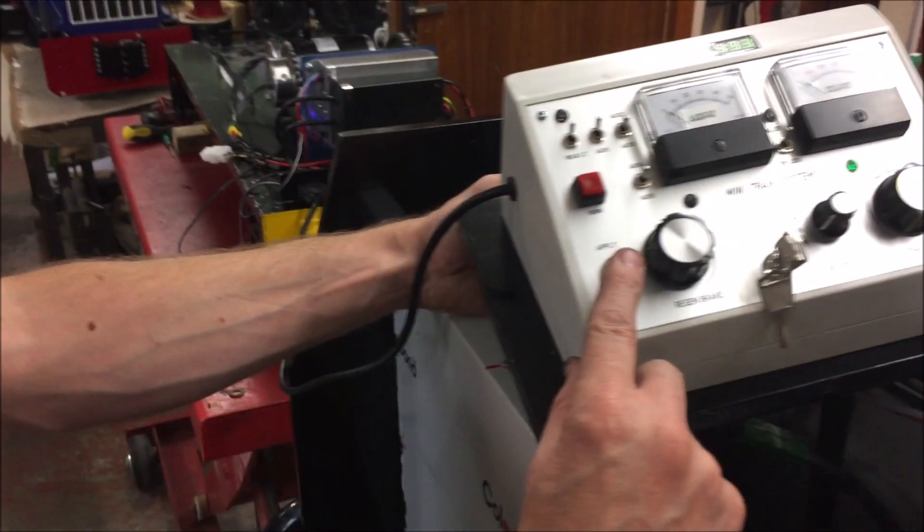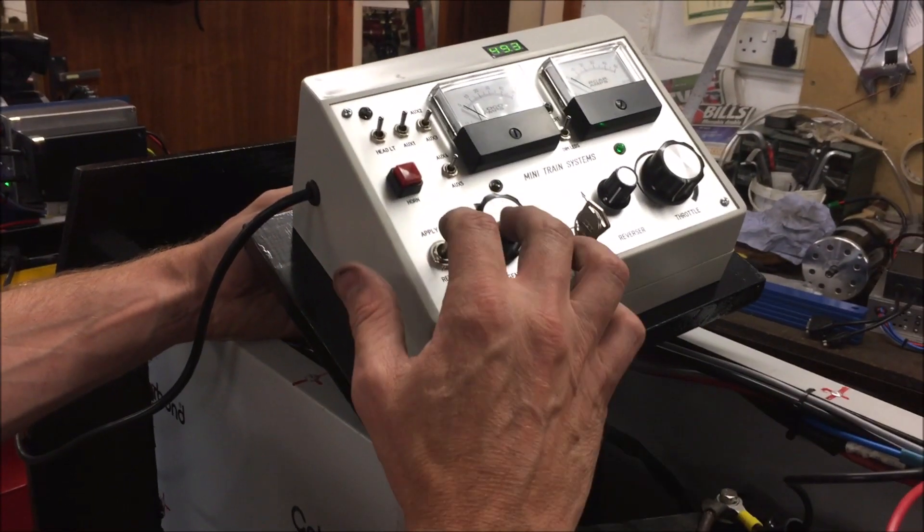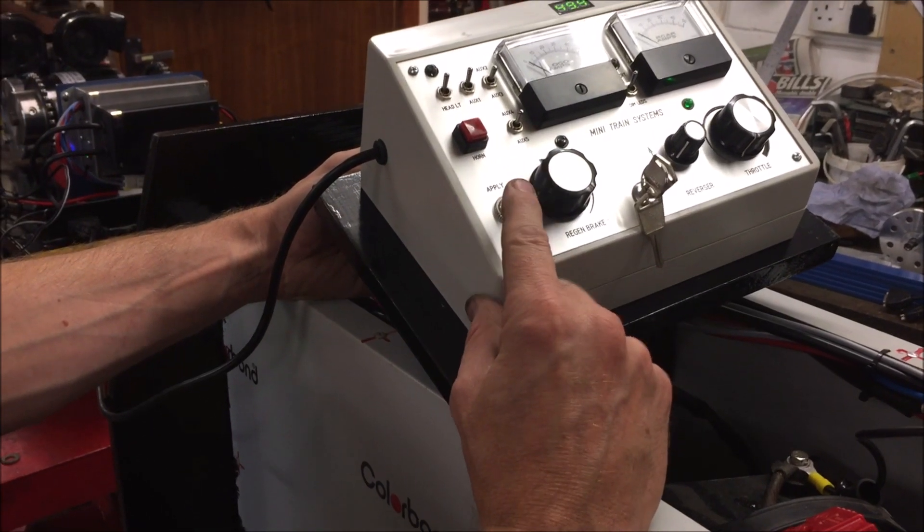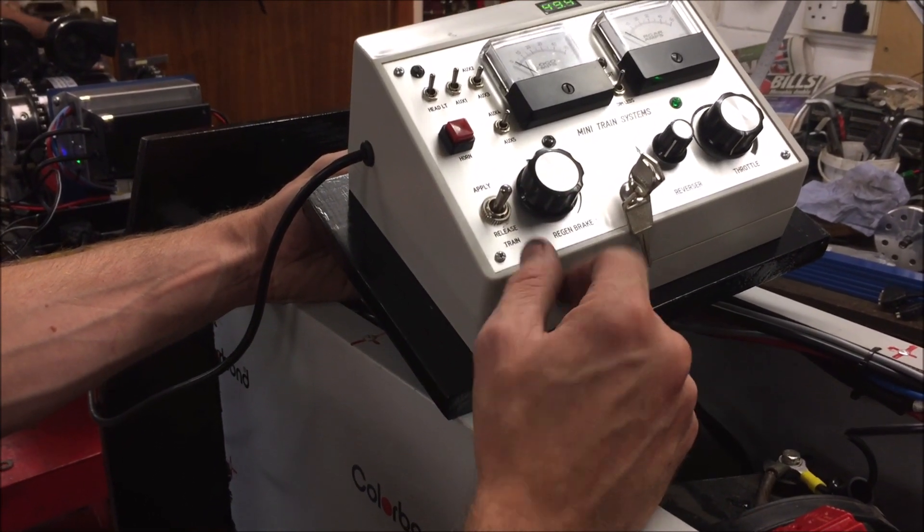So this is the train braking. This is the locomotive and driving car braking. They're two separate braking systems. So think of this as a handbrake. That is regen braking on the model.